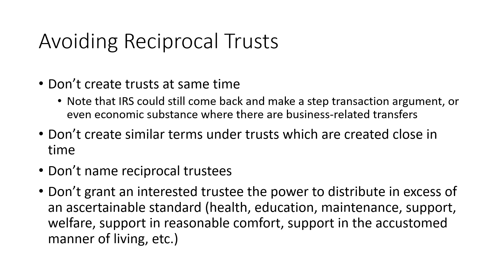Even if you don't create trusts simultaneously, it's important to note that the IRS could still come back and make a step transaction argument or even an economic substance argument, especially when there are business-related transfers, like with a family limited partnership. It's also important to create trusts that don't necessarily have similar terms when created close in time, or that are funded with similar amounts. So if you're going to gift $1 million per child, it might not be a good idea to put $1 million into each separate trust — you might want to vary the gifts a bit and then equalize them at a later time.